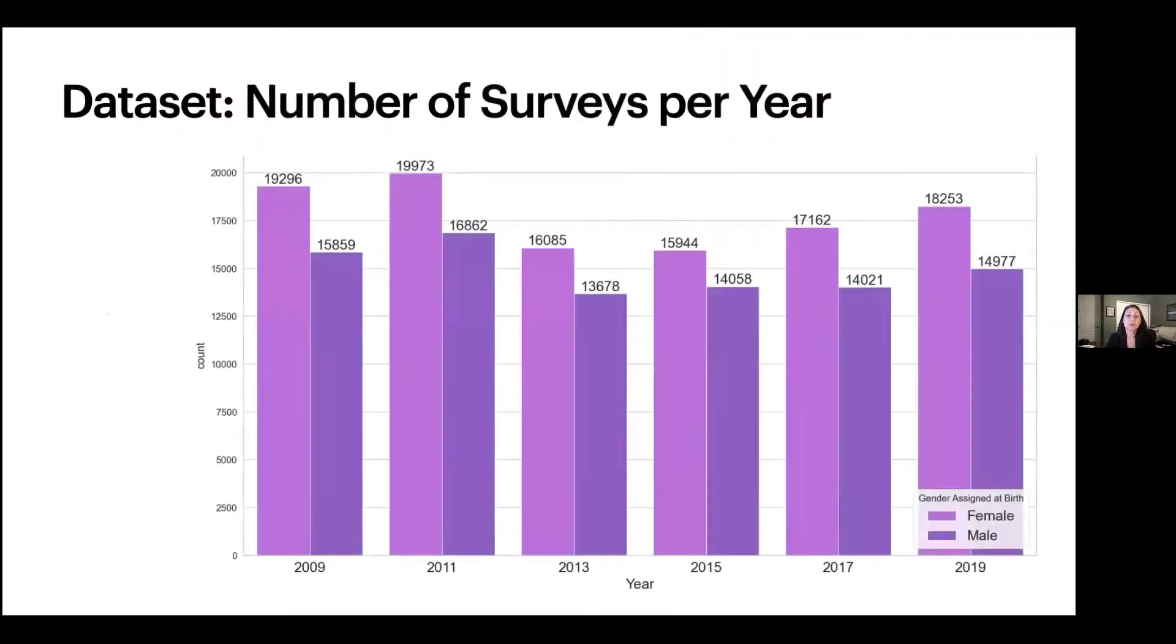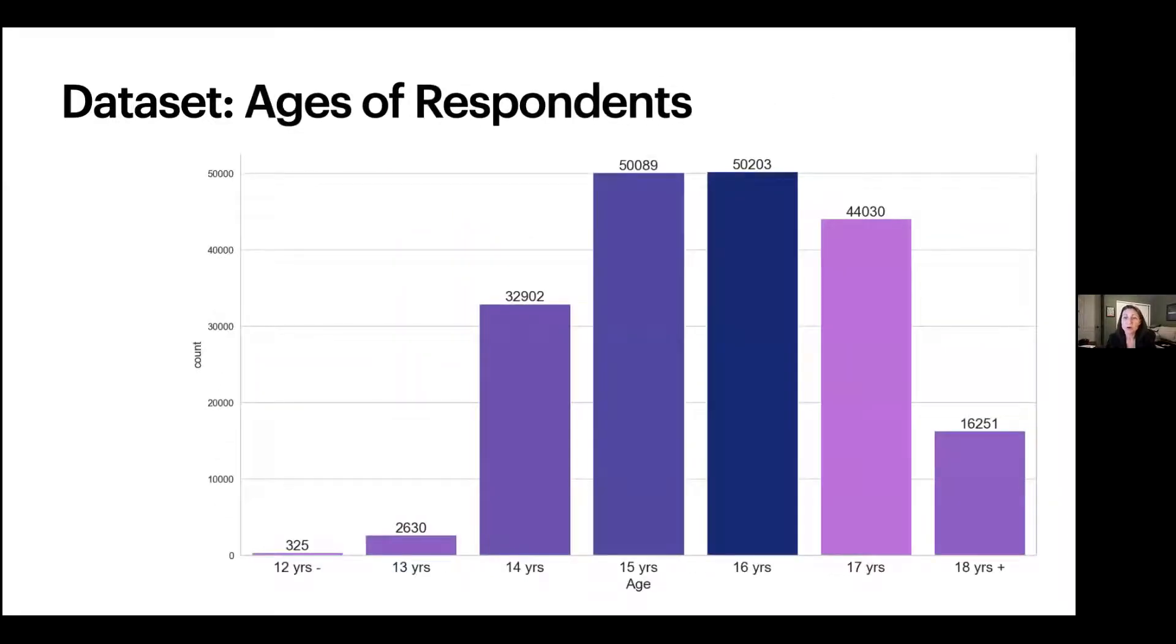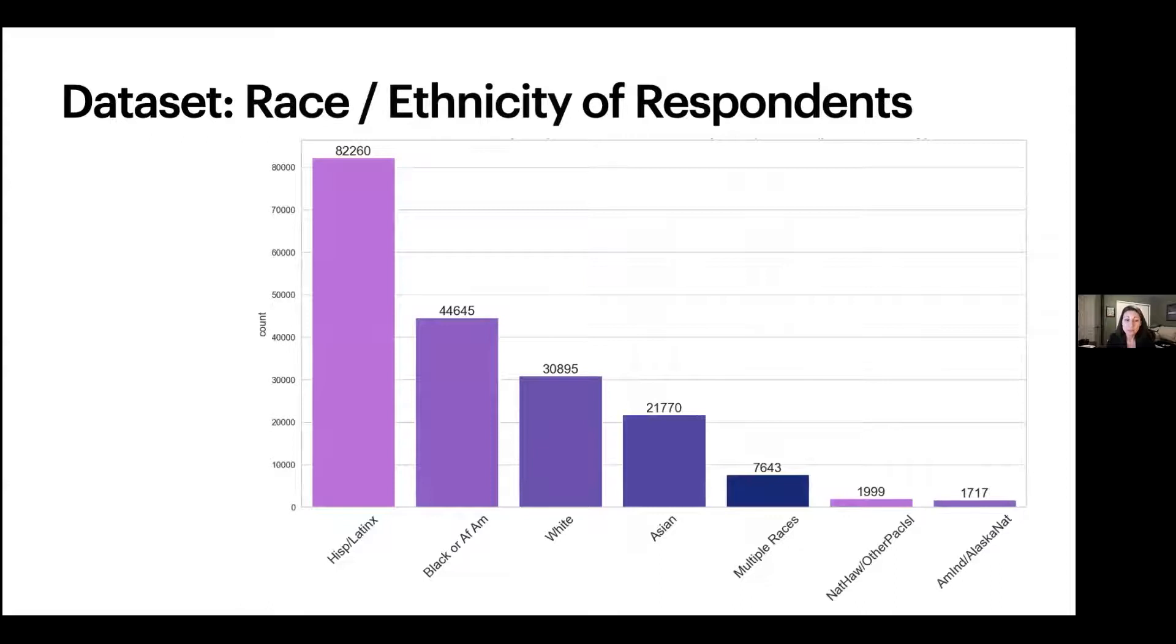The data set itself, which I just pulled from the CDC website, was relatively uniform as far as the number of surveys taken per year. This is for gender assigned at birth, males and females over the course of 2009 to 2019, how many survey respondents they got. The ages ranged from 12 to 18 years old for the data that I looked at, while the majority of the students were 15 and 16 years old. The race and ethnicity of the respondents was primarily Hispanic, black, and white.